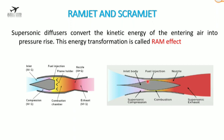The scramjet is similar to a ramjet, but with a key difference: in a ramjet, air is decelerated to subsonic velocity before reaching the combustion chamber, while in a scramjet, the airflow remains supersonic throughout the engine. This allows the scramjet to operate efficiently at extremely high speeds. The exhaust gases leave the scramjet at higher velocities, around Mach 6 to 8. These engines are used in space launch vehicles and supersonic missiles.